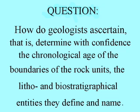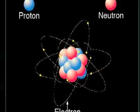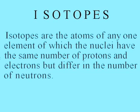How do we know that the number 543 and the others used to calibrate the named rock units are valid? The main thrust of the remainder of this discussion about time is an attempt to answer that question. Restated: how do geologists ascertain the chronological age of the boundaries of the rock units they define and name? Answer: by refining the measurement of time derived from nature's calendar and clock — the isotopes of certain elements.